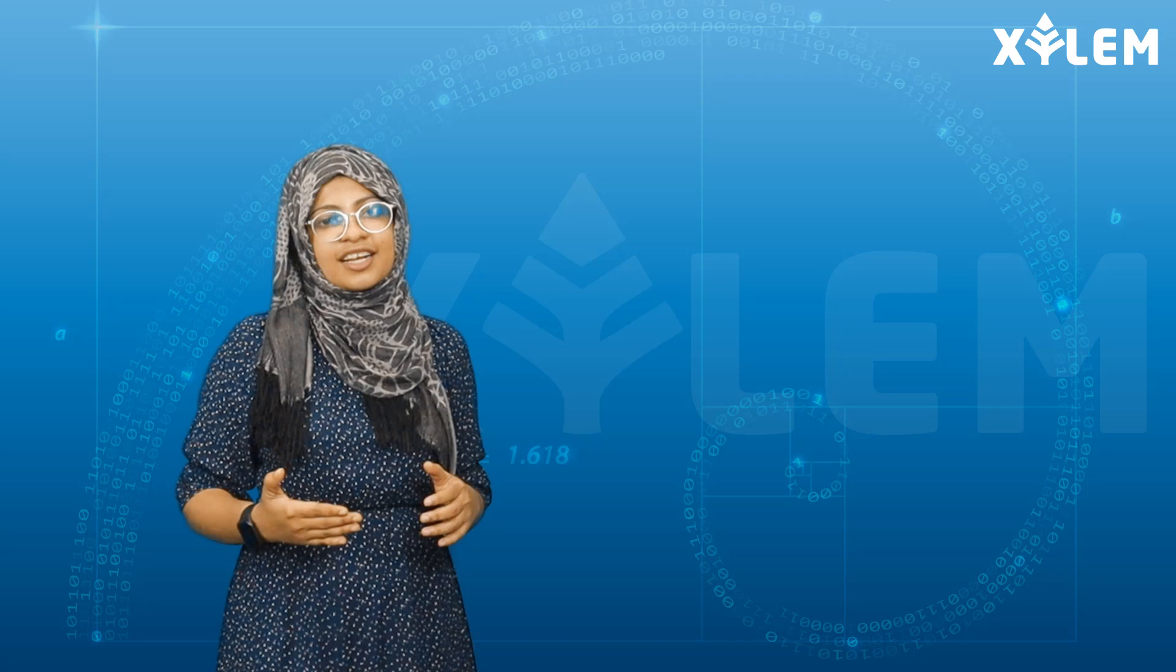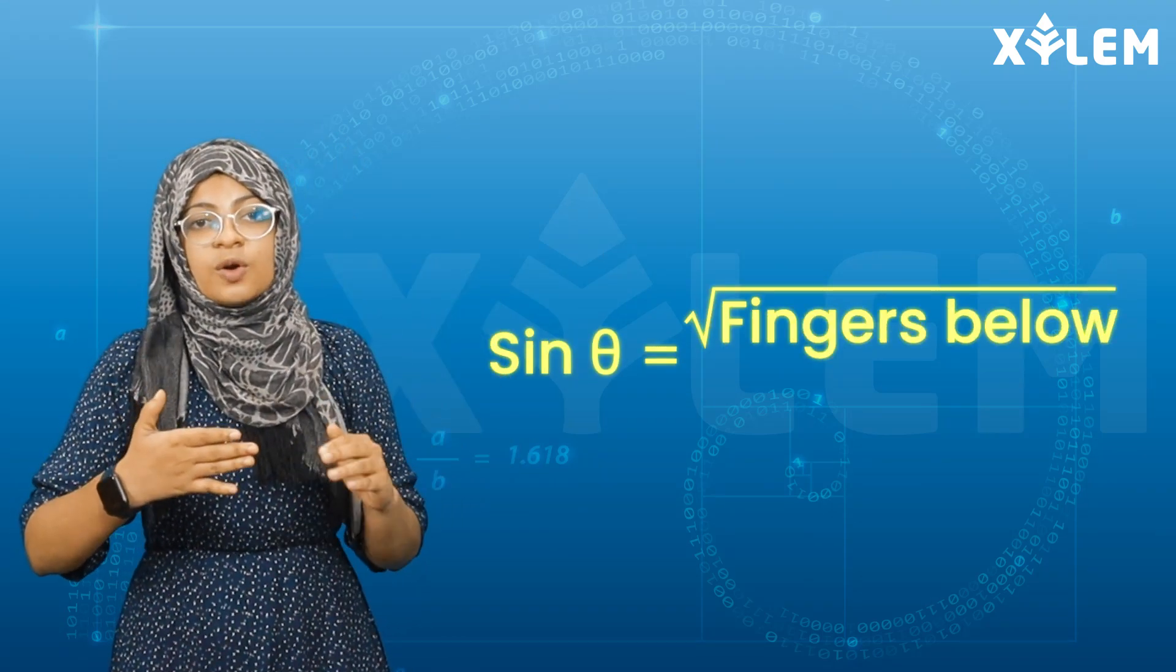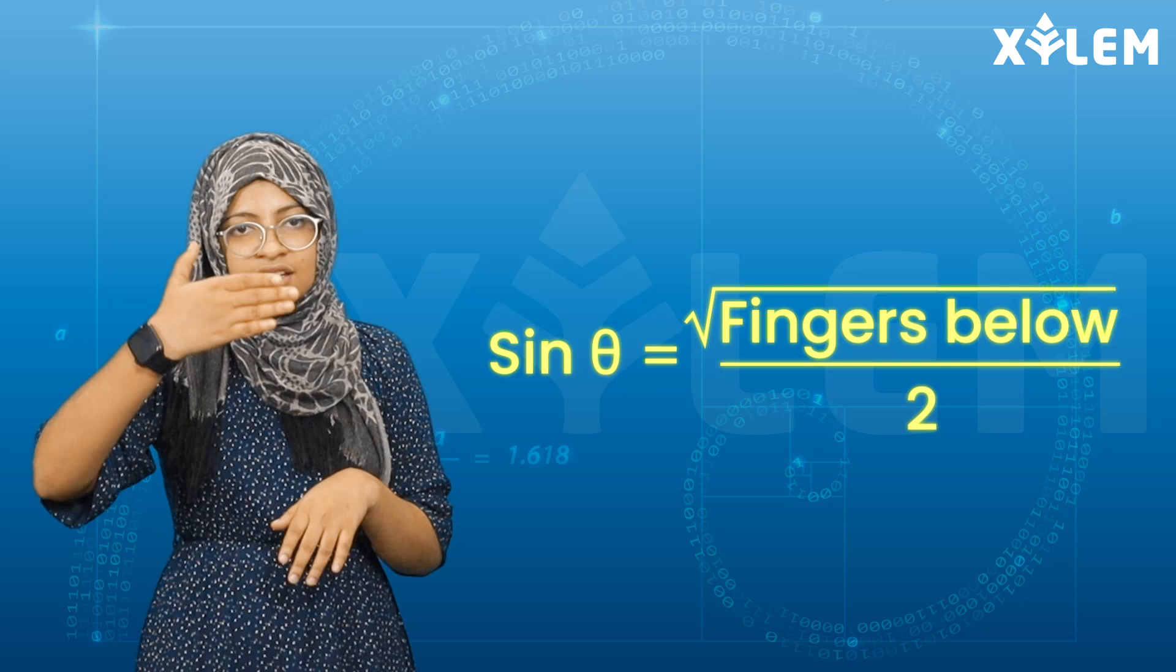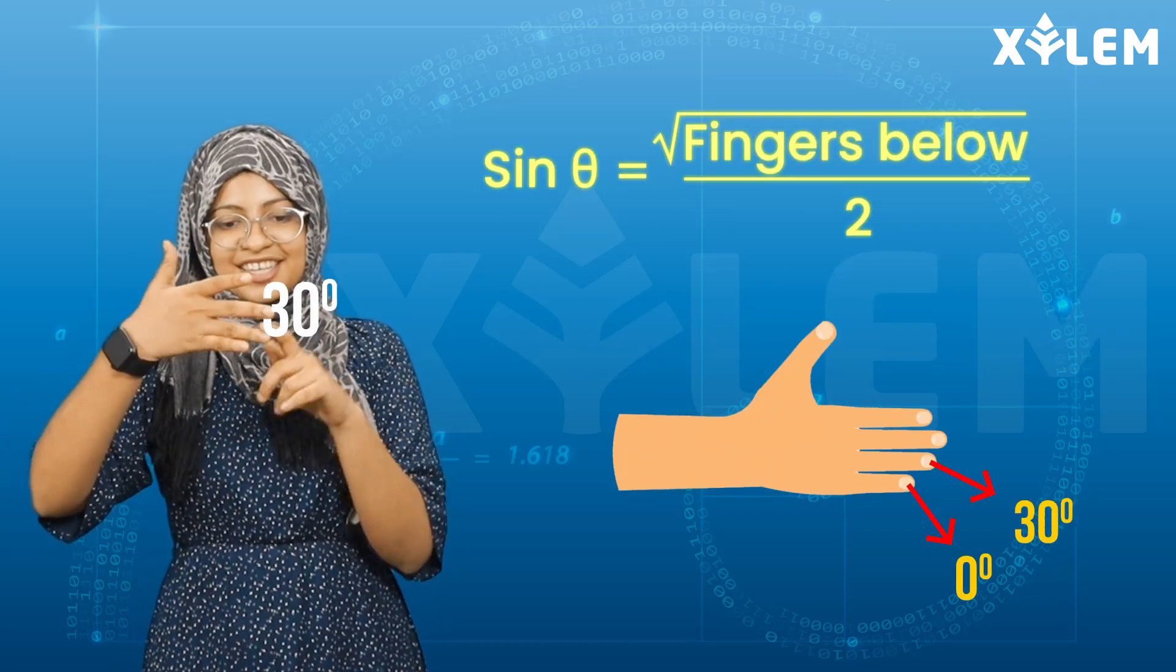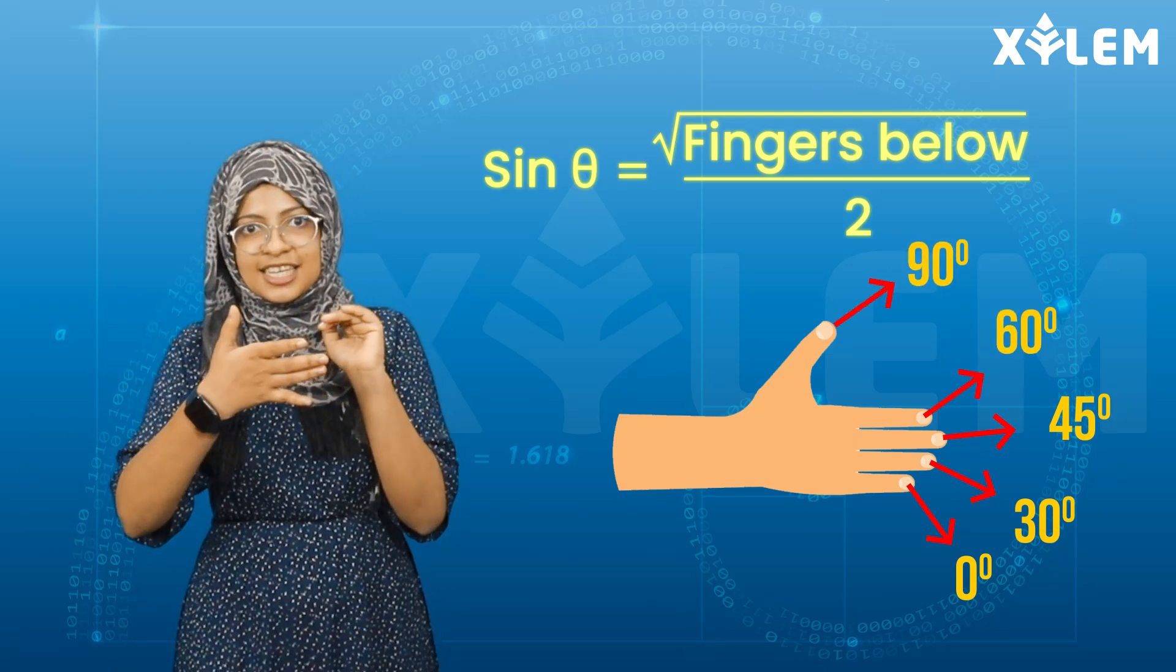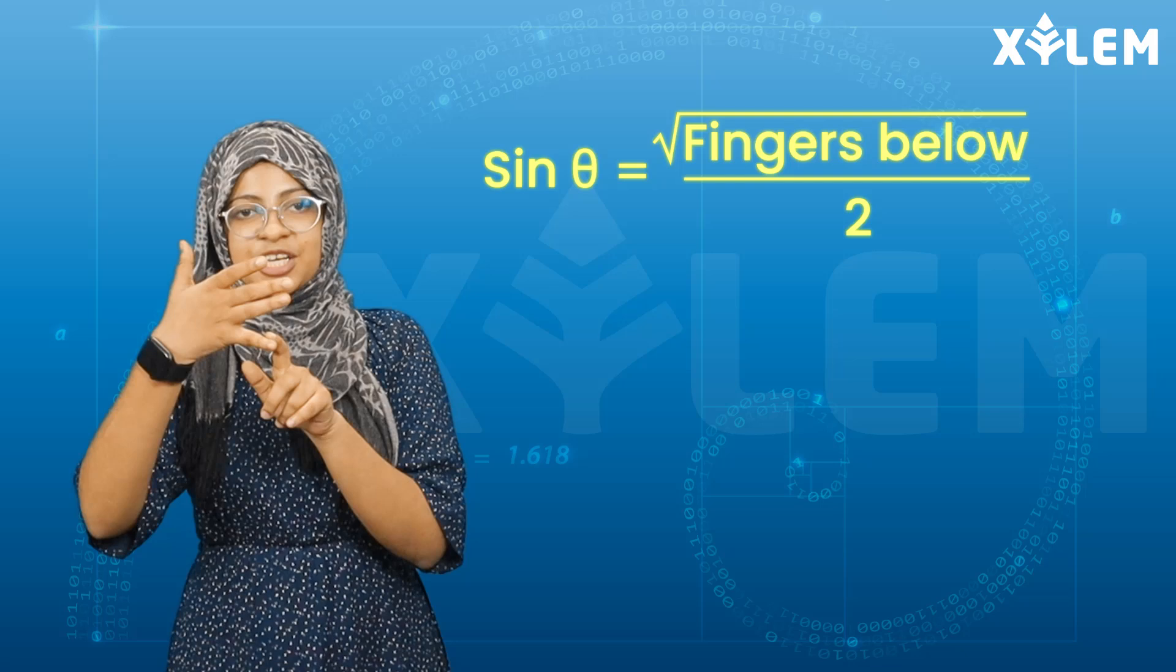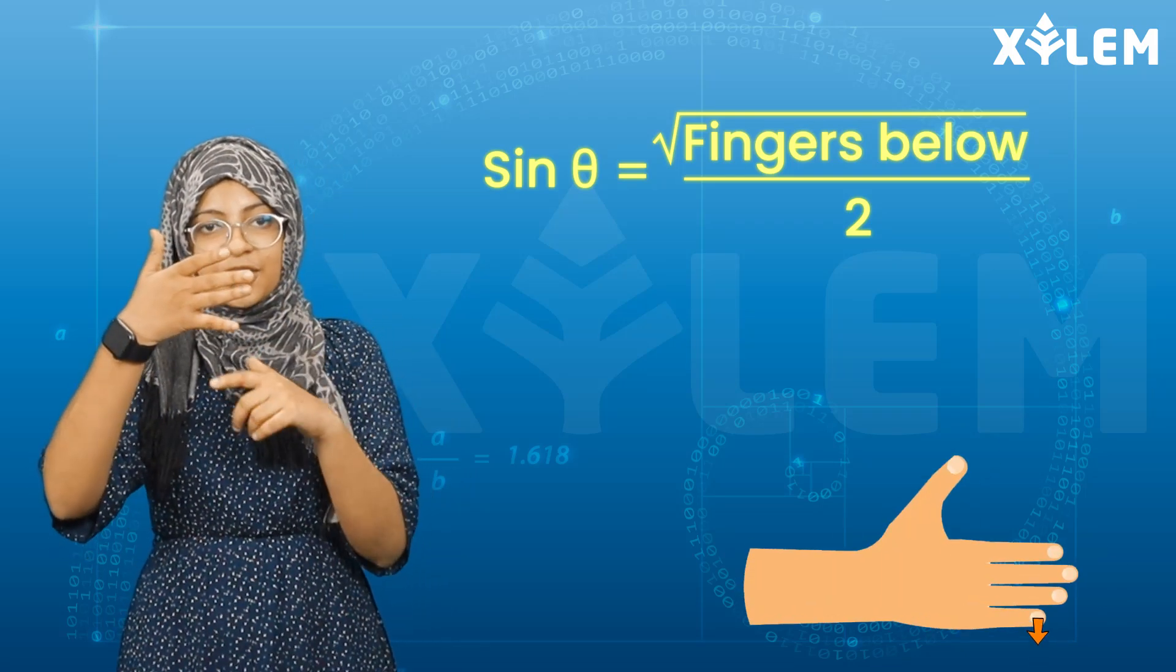We will use our hands for this trick. The formula is: sin θ equals root of fingers below divided by 2. This finger is 0 degrees, this is 30, 45, 60, and 90 degrees. How many fingers are below for 0? There are none.